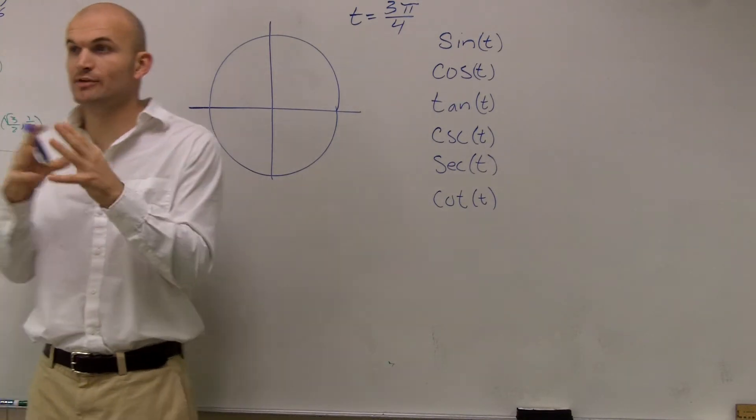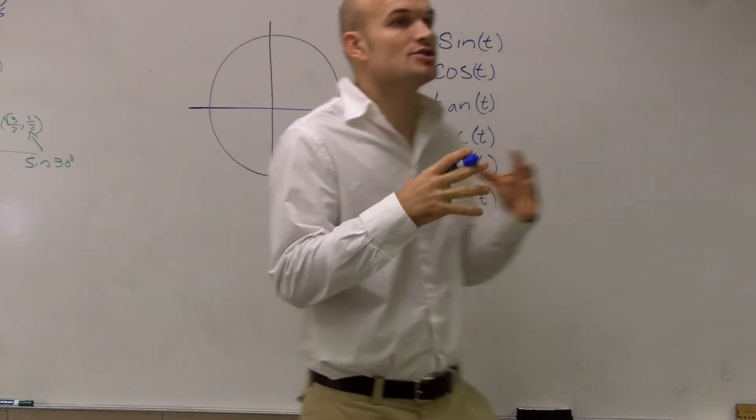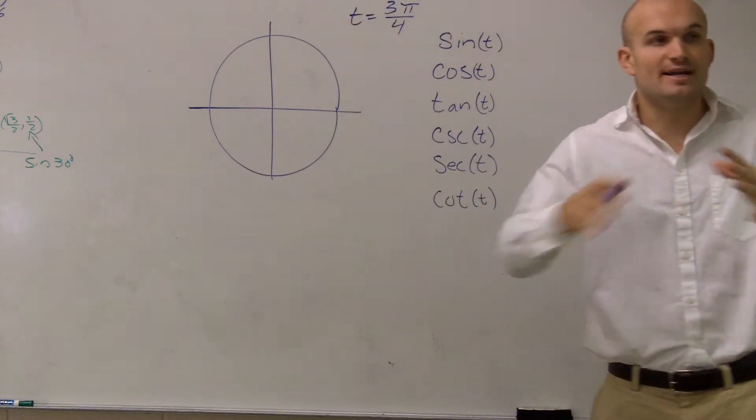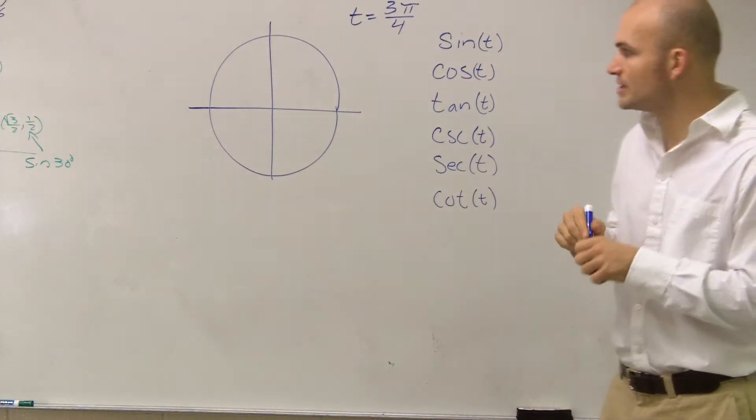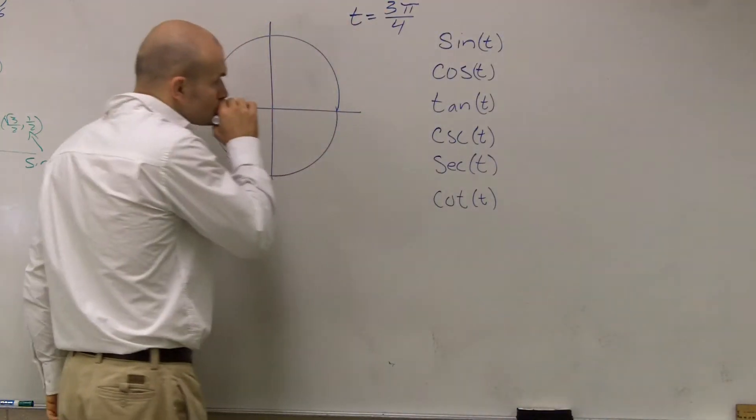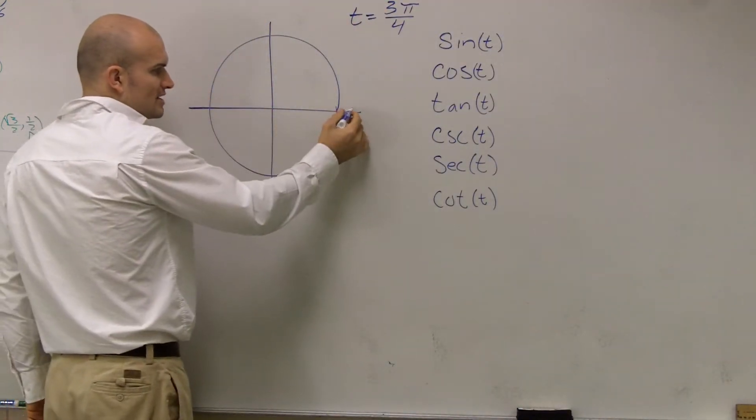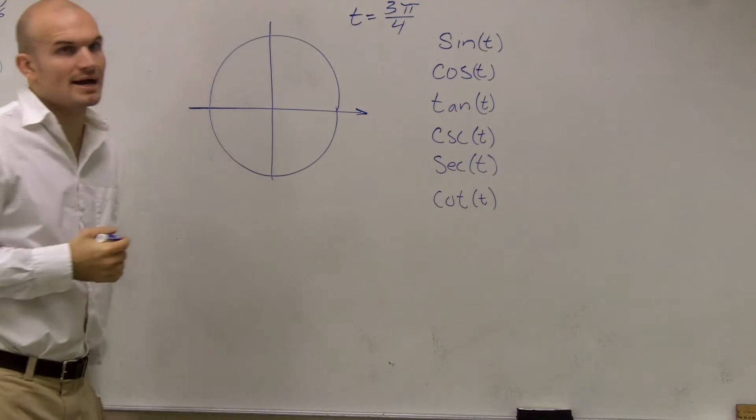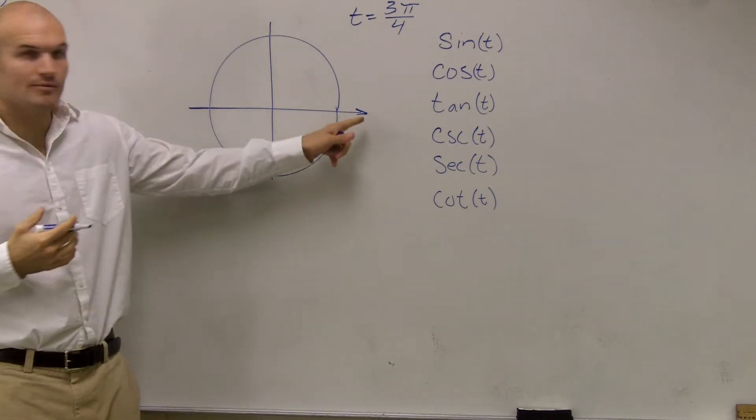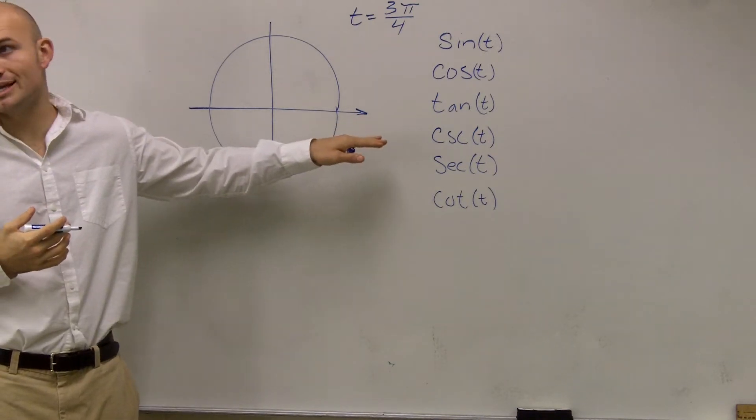So a couple things we need to remember. Remember, t represents a point on our unit circle. So first thing we need to do is find out where is our point t. And to do this, we need to remember where we're going to start. We're going to start on our x-axis. We're going to start right here. That's what we call our initial side.